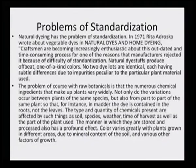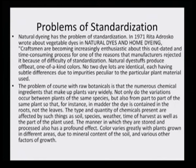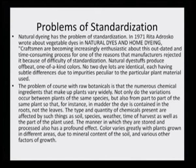What are the problems one encounters while doing standardization? Natural dyeing has the problem of standardization. In 1971, Rita Adrosko wrote about vegetable dyes in the book 'Natural Dyes and Home Dyeing', saying that craftsmen are becoming increasingly enthusiastic about this outdated and time-consuming process, for one of the reasons that manufacturers reject it — because of difficulty of standardization. Natural dyestuffs produce offbeat, one-of-a-kind colors; no two dye lots are identical and have very stable differences due to impurities peculiar to the particular plant material used.